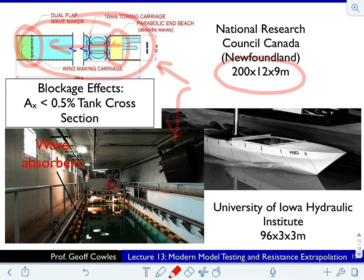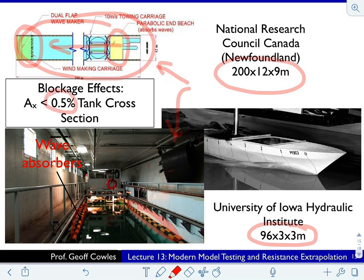The University of Iowa tank is 96 by 3 by 3 meters — a somewhat smaller tank. They have a variety of tanks at their laboratories. Along the edge you can see pool-like floats designed to dampen the waves formed by the ship, quiet down the water between experiments, and prevent reflection of the wave field so you don't have boundary effects during wave field analysis. Blockage — you typically try to maintain about half a percent, a pretty small blockage ratio, to reduce the influence of tank confinement on flow around the hull, which affects the velocity field, pressure gradients, and transition.